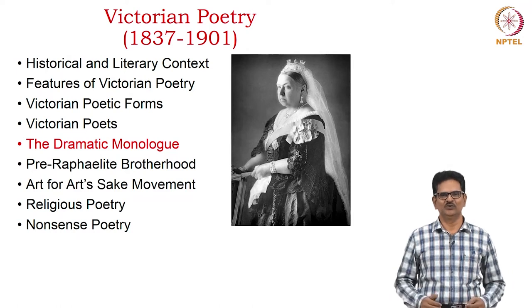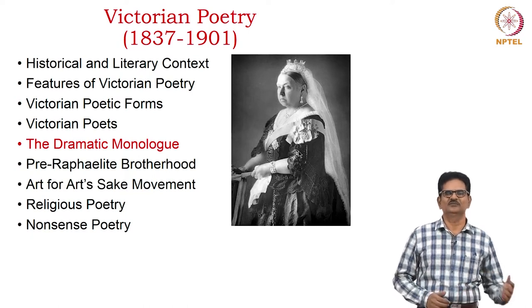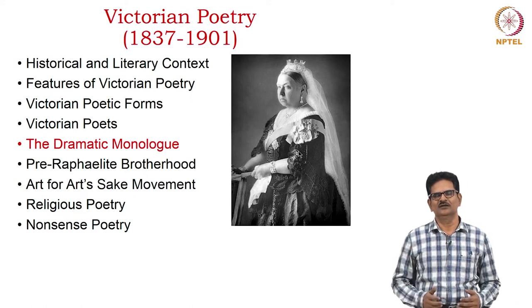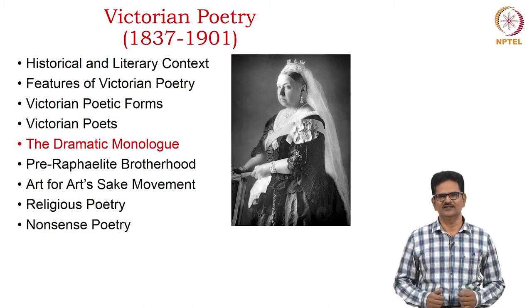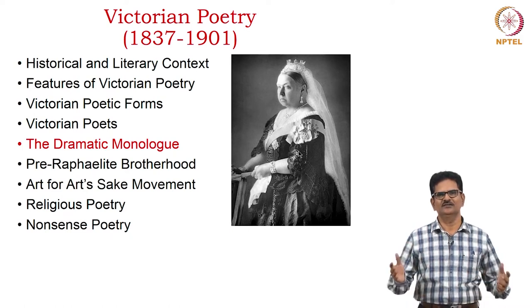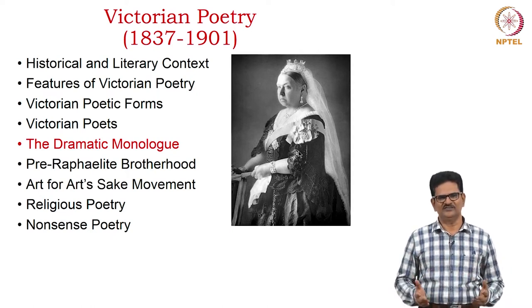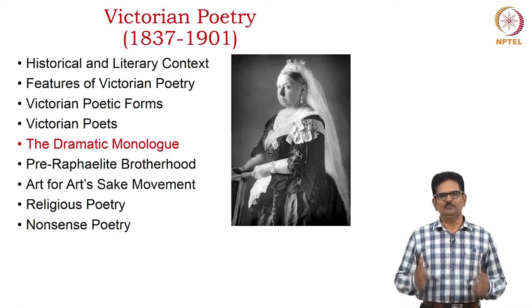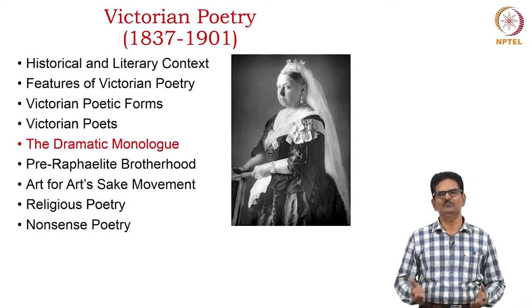We are going to deal with Victorian Poetry this week. We begin with a general introduction to Victorian Poetry from the period 1837 to 1901. First, we will pay attention to the historical and literary context, identify the features of Victorian Poetry, discuss certain poetic forms practiced during this period, list a few prominent poets, and pay special attention to the dramatic monologue form which became very popular during this time.